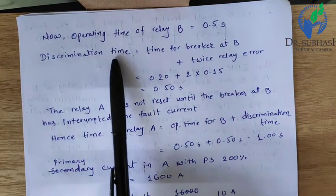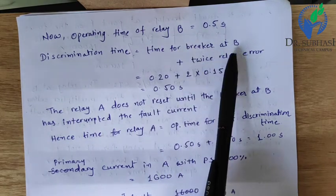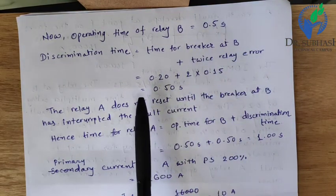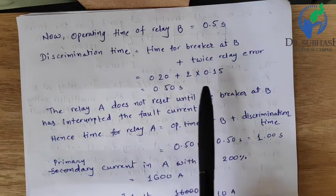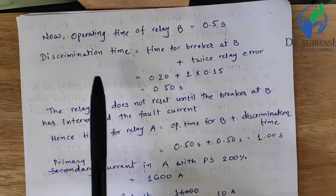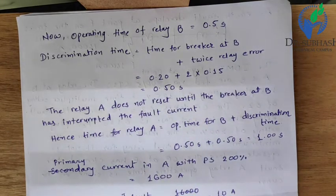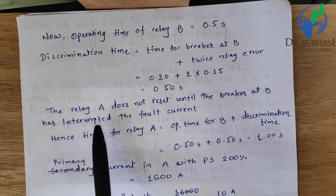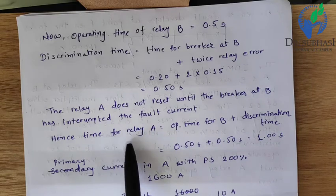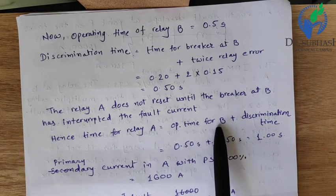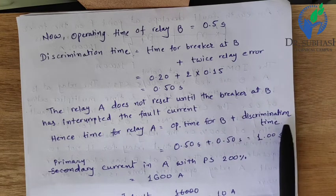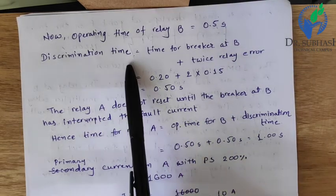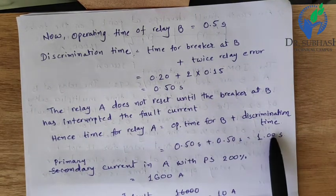Discrimination time equals time for breaker at B plus twice the relay error: 0.2 + (2 × 0.15) = 0.5 seconds. Since relay A does not reset until the breaker at B has interrupted the fault current, the time for relay A equals operating time of B plus discrimination time: 0.5 + 0.5 = 1 second.